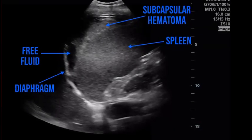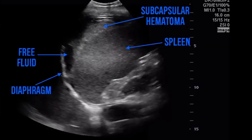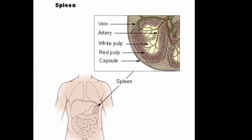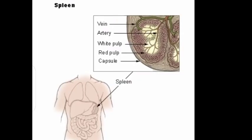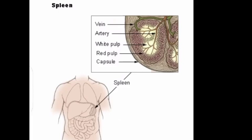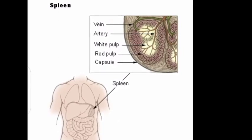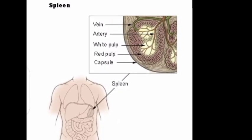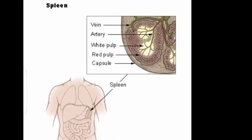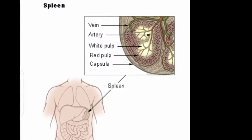Splenic trauma can occur after blunt or penetrating trauma, or secondary to medical intervention. The spleen is the most commonly injured abdominal organ, and this may follow accidental or non-accidental trauma. In blunt trauma, the spleen can account for up to 49% of abdominal organ injuries.